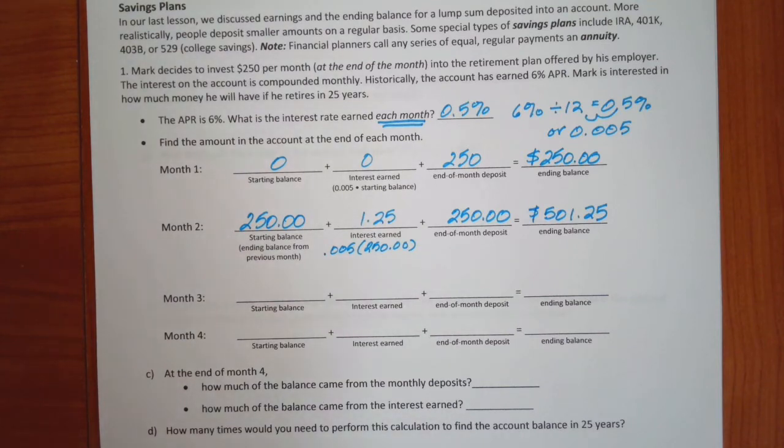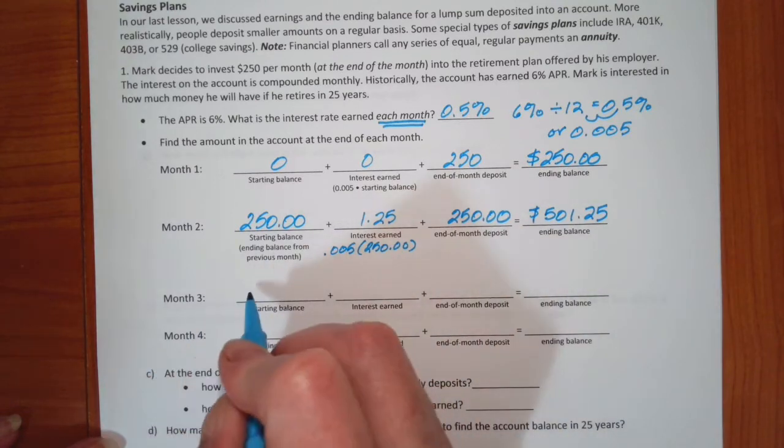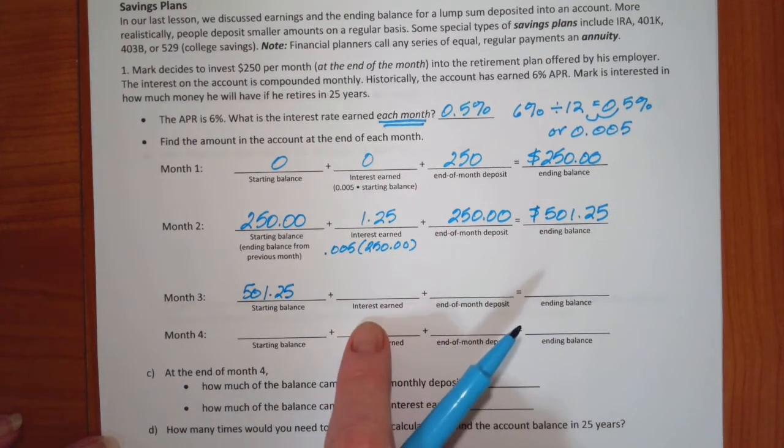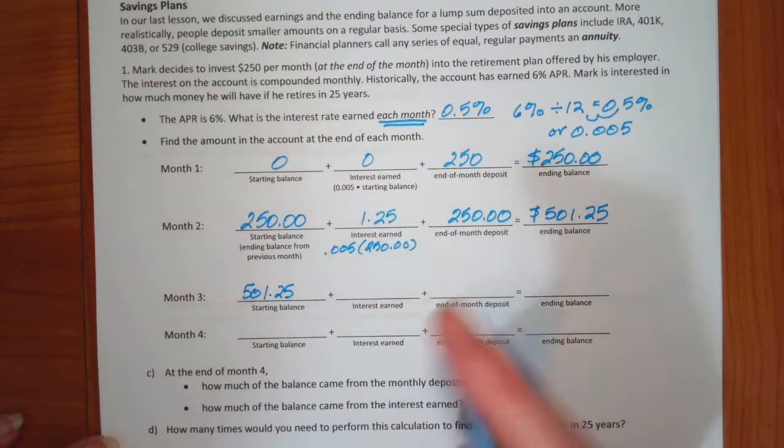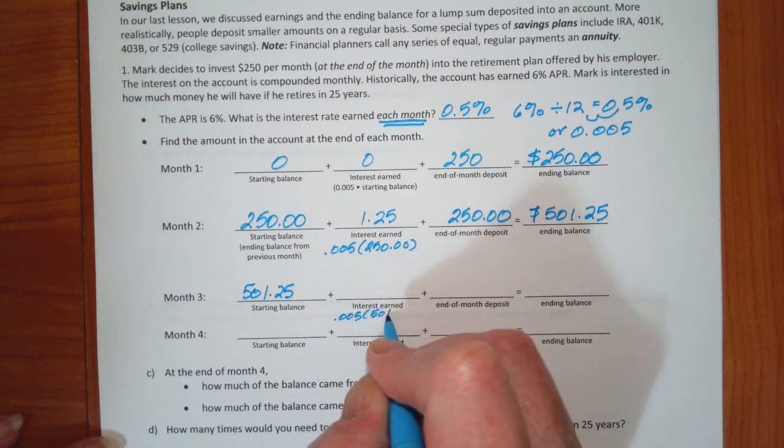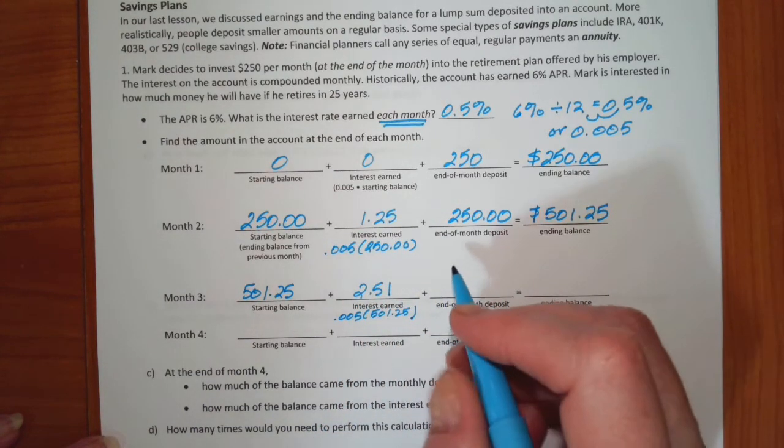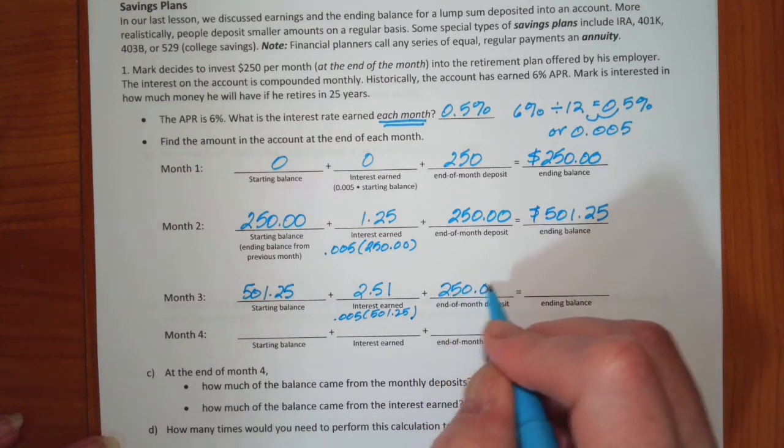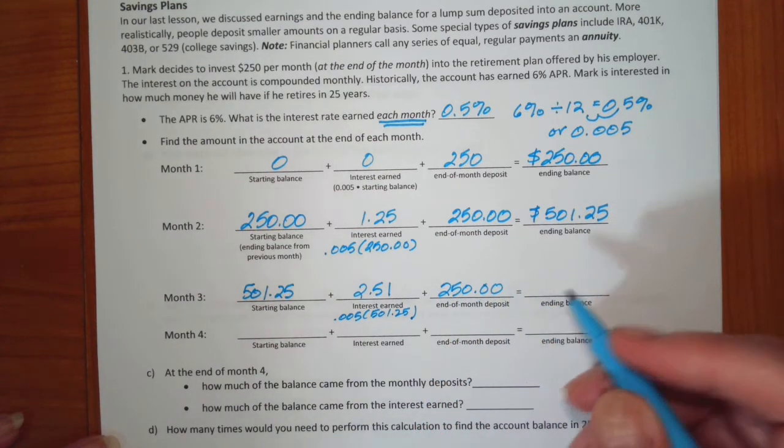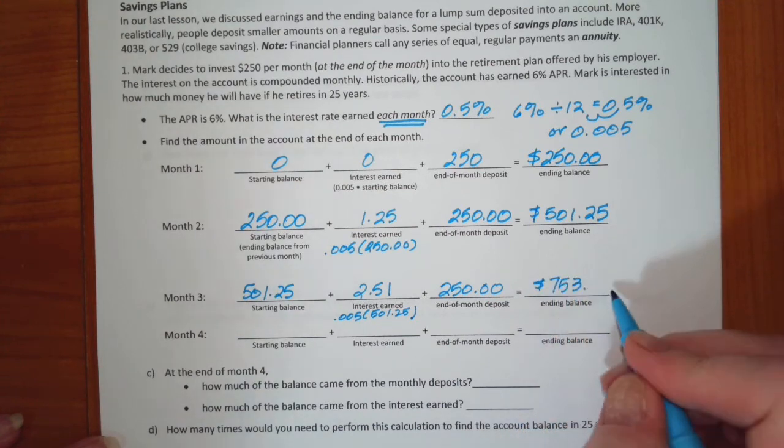Now, it's just a lather, rinse, repeat situation. We take the ending balance here, it becomes the starting balance in our next month, so this is $501.25. The interest earned is 0.005 times the starting balance, I'm sorry, 0.005 times 501.25, which gives us $2.51. Then, he puts in another $250 at the end of the month, and ends up with $753.76.